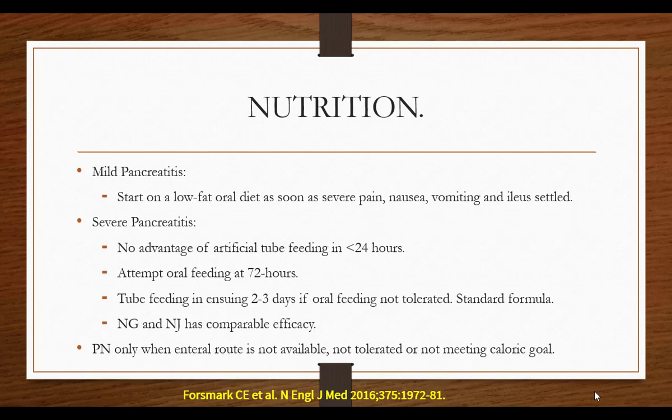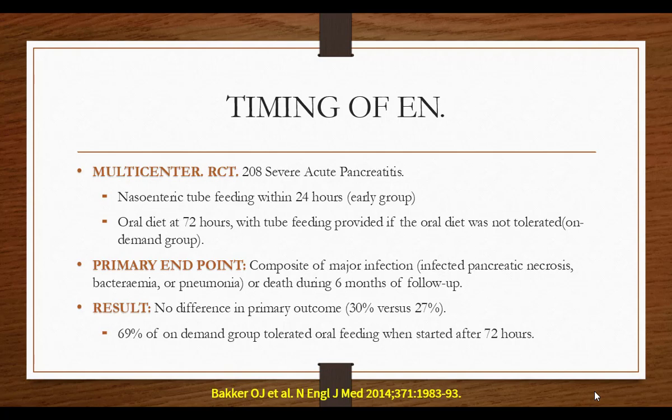To support this, there is a wonderful Dutch group multicenter randomized control trial — 208 patients of acute severe pancreatitis randomized into two groups. One group received nasoenteric feeding (NG or NJ) in the first 24 hours — the early group. Another group was kept on oral diet, waiting 72 hours before starting feeding. Primary endpoint was a composite of major infection plus death in the first six months. The result: no difference in the primary outcome between the two groups. So there is no need to do it quickly. Interestingly, 70% of patients in the delayed oral feeding group could continue with oral feeding successfully — demonstrating there is no need for forced early tube feeding.